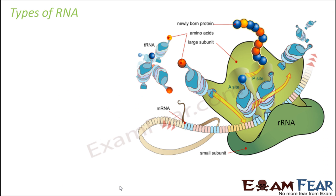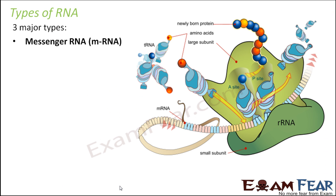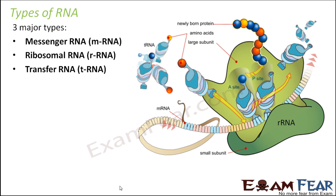So there are three major types of RNA: messenger RNA, ribosomal RNA, and transfer RNA, and they are all abbreviated as mRNA, rRNA, and tRNA. So these are the three types of RNA.